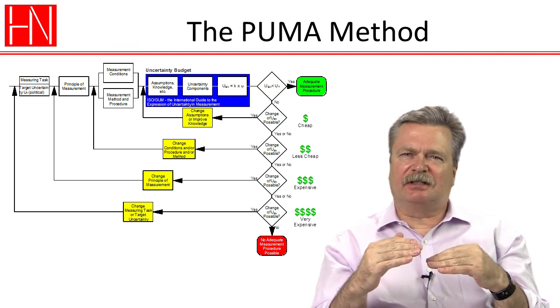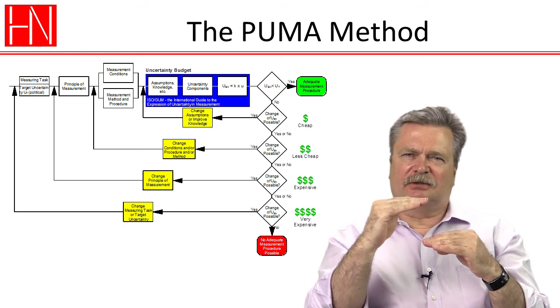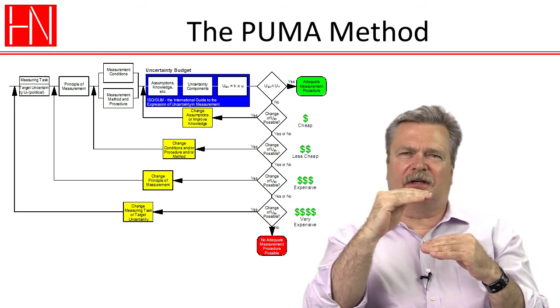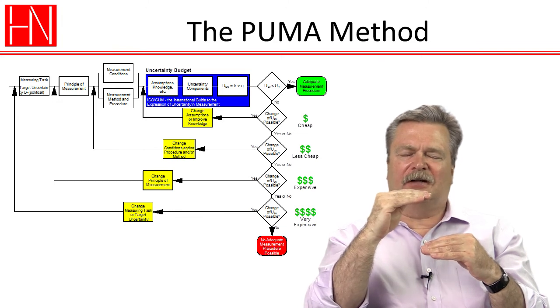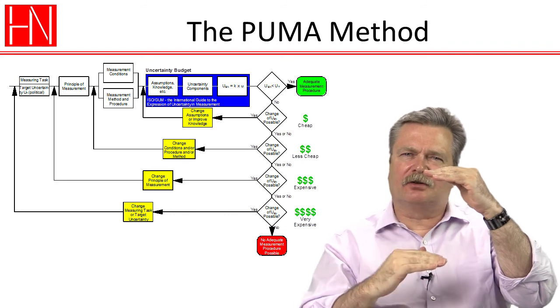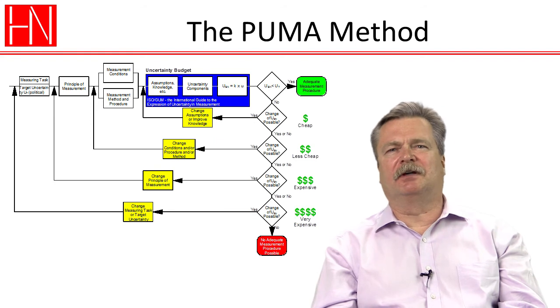And so the idea is that we estimate on the high side so we say we don't know what this contributor is but we are pretty sure it is not more than this. And if when we evaluate that way and we are still less than the target uncertainty then we know that true uncertainty is also less than the target and that is what we do with the PUMA method.